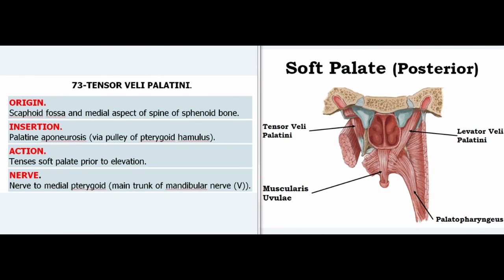73. Tensor Veli Palatini. Origin: Scaphoid fossa and medial aspect of spine of sphenoid bone. Insertion: Palatine aponeurosis via pulley of pterygoid hamulus. Action: Tenses soft palate prior to elevation. Nerve: Nerve to medial pterygoid, main trunk of mandibular nerve (V).